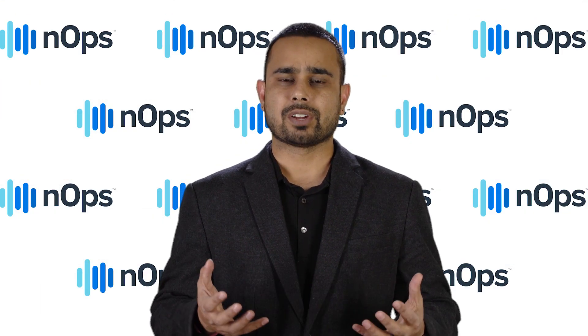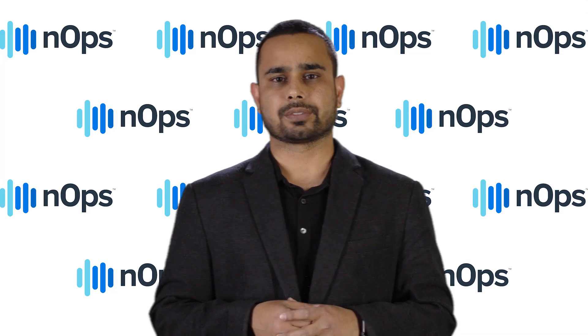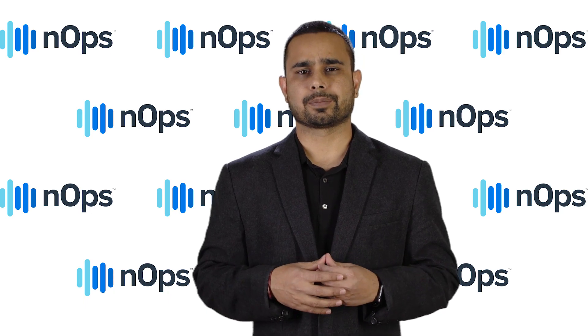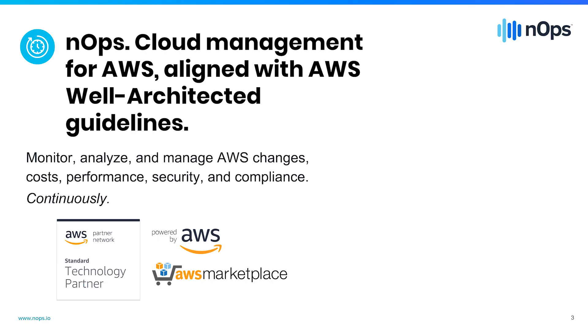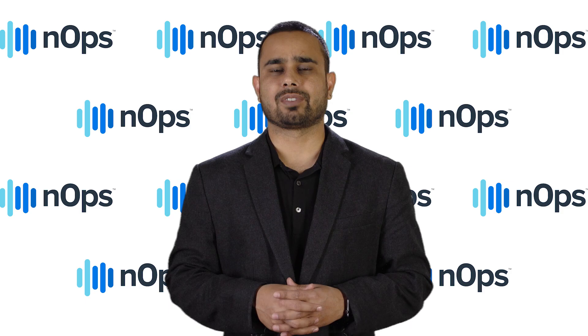According to AWS Well-Architected Framework, security is composed of five different areas. Before I talk about these five different areas, let me briefly talk about N-Ops. We developed N-Ops to help companies achieve compliance with Well-Architected guidelines — not on a one-time basis, but on a continuous basis. Let's dive into these five areas.